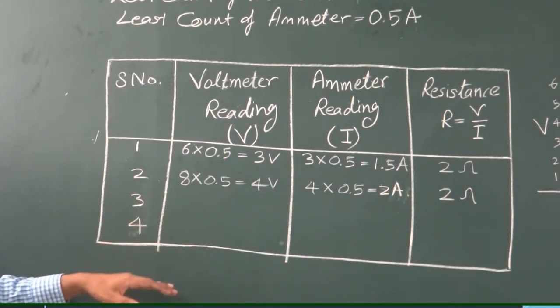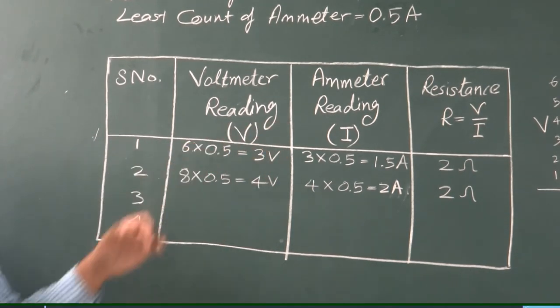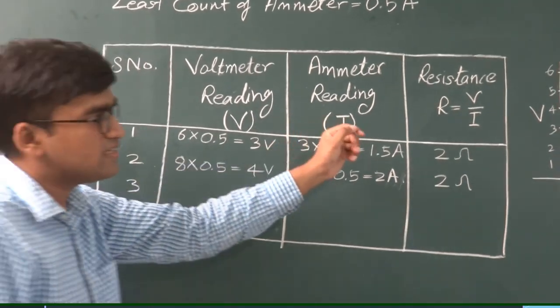You will keep on repeating when you get at least six or seven sets of readings. Why we are taking more readings? Because we will have a graph with more points. Now let's have a look at the graph.